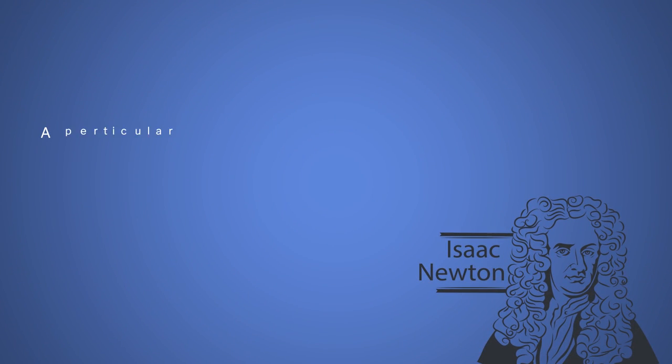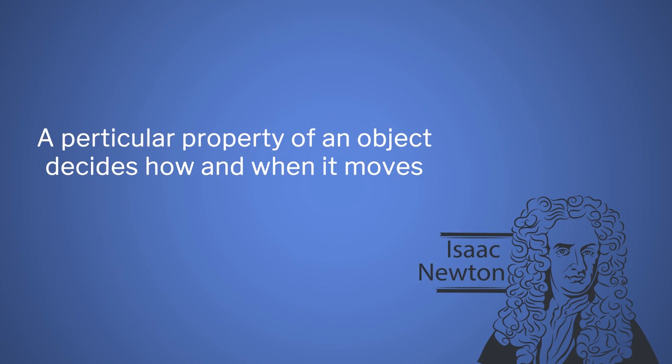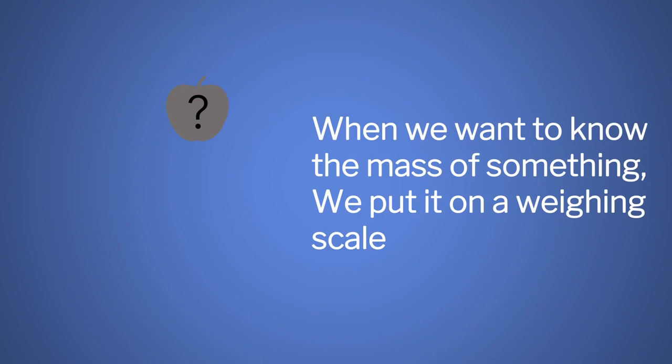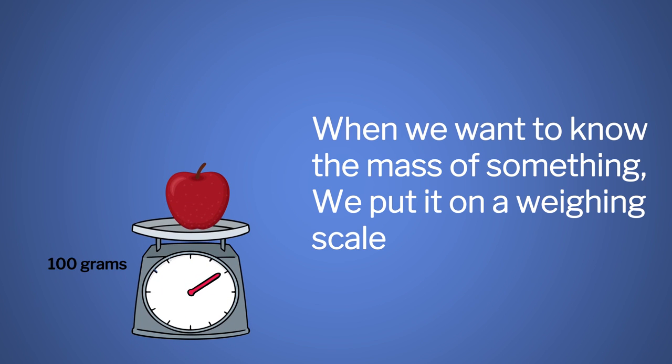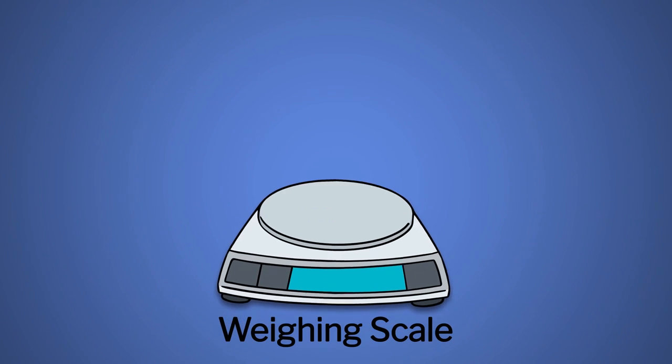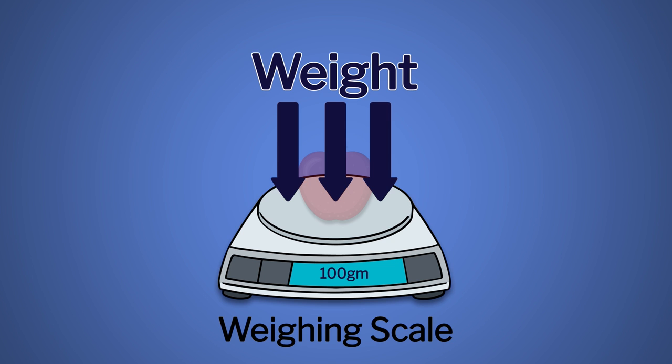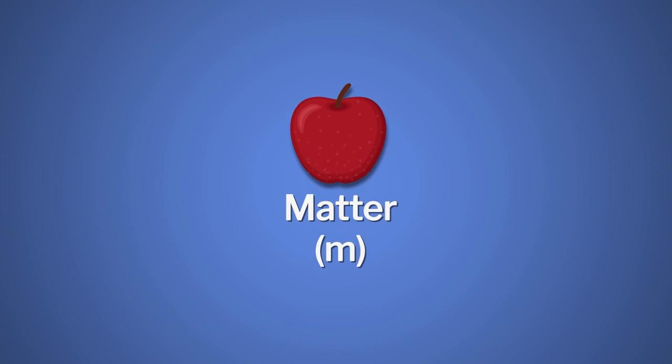Newton said that it was a particular property of objects that decided how and when it moves. That property is its mass. Mass is basically the atoms and molecules packed inside an object. When we want to know the mass of something, we put it on a weighing scale. But weighing scales don't really measure mass — they calculate the weight. Mass is simply the matter.